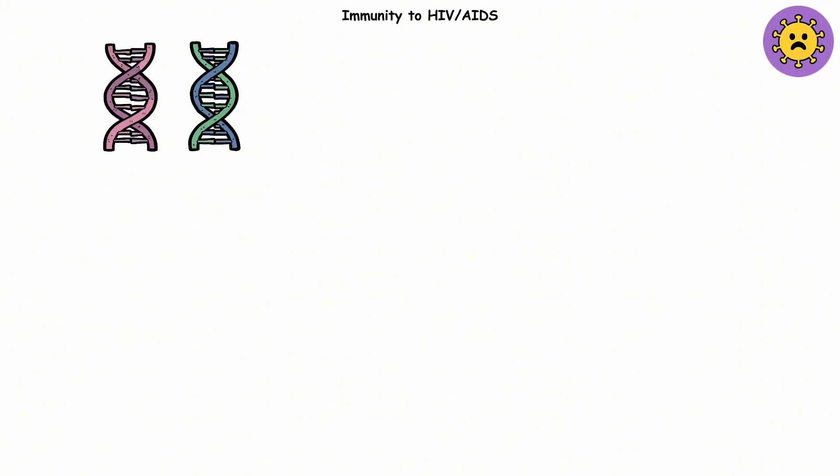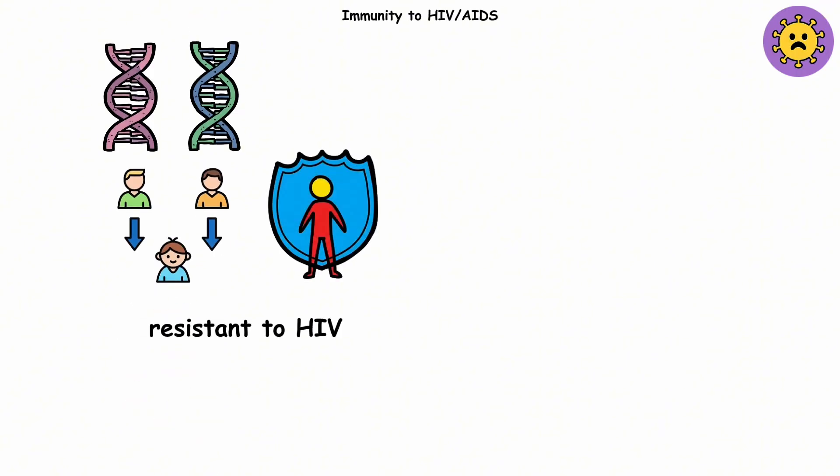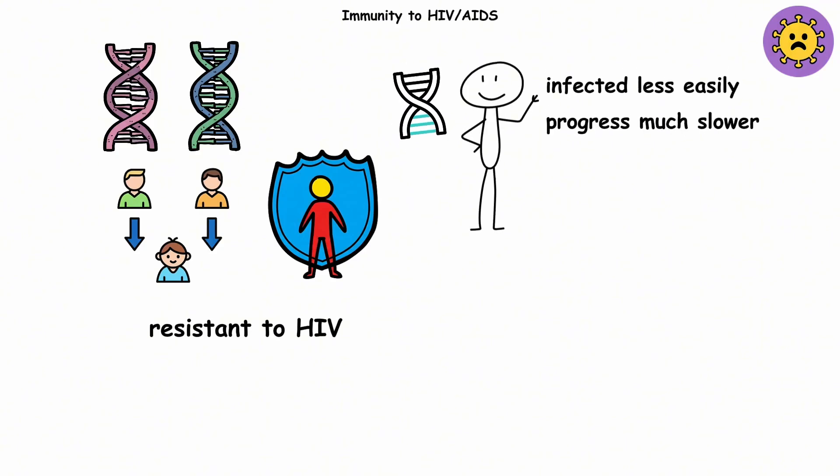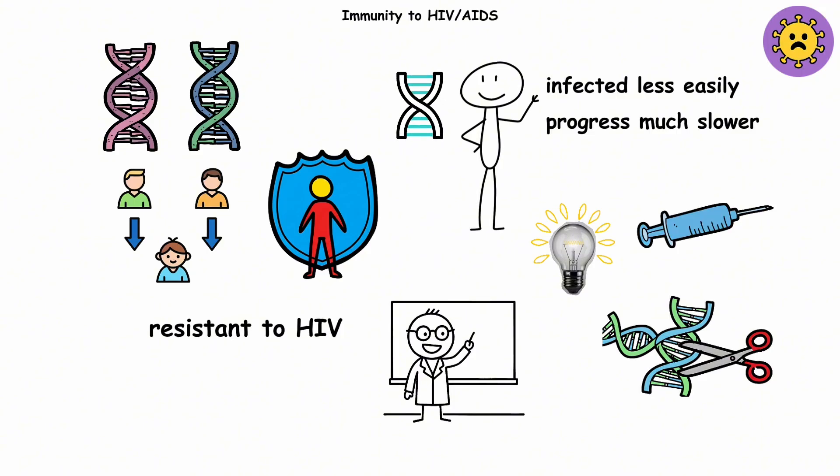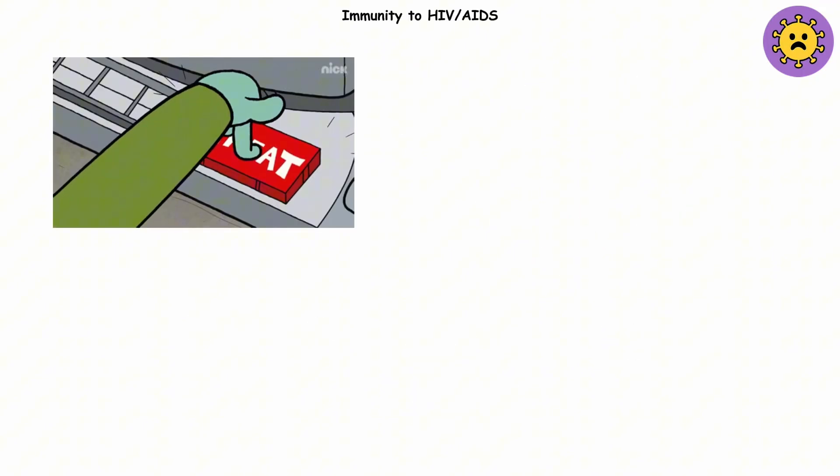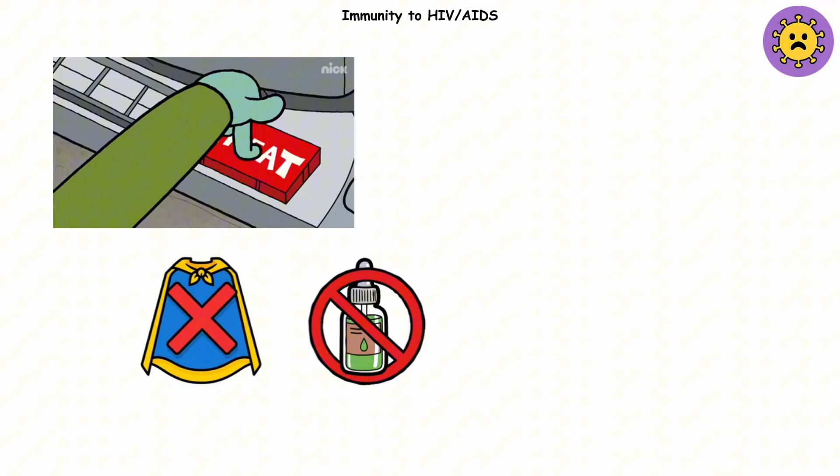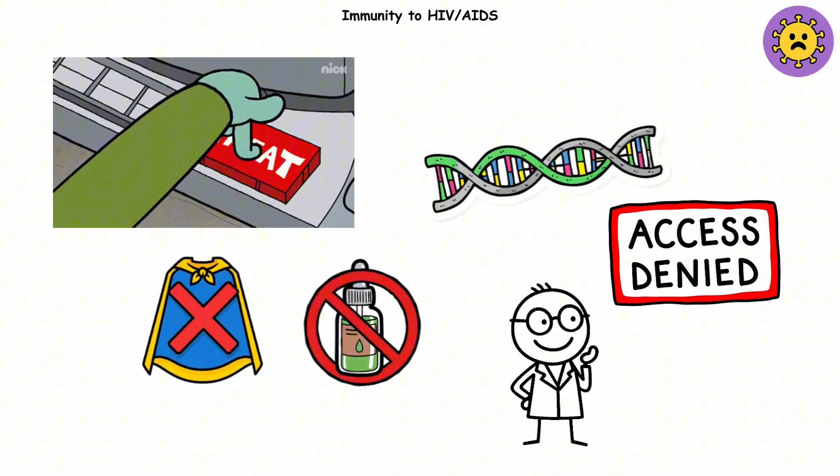People with two copies of this mutation, one from each parent, are basically resistant to HIV infections. Even those with just one copy tend to get infected less easily and progress much slower if they do. Scientists have even used this mutation as inspiration for experimental gene therapies, trying to copy-paste the protection into others. It's one of nature's rare cheat codes. No cape, no serum, just genetics saying, access denied.